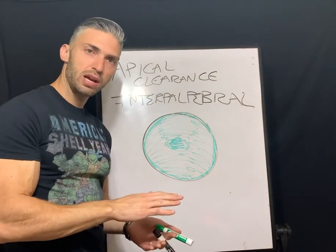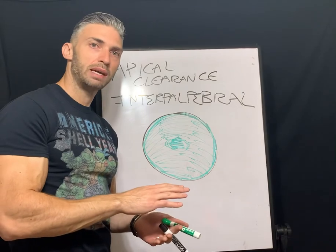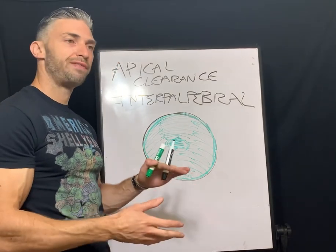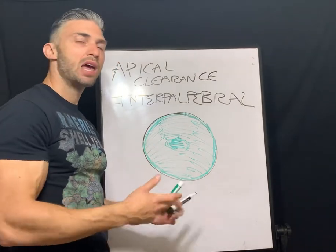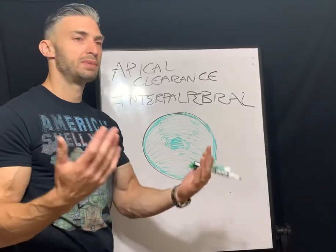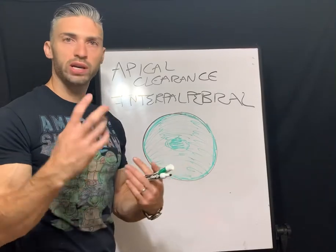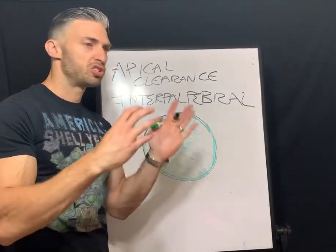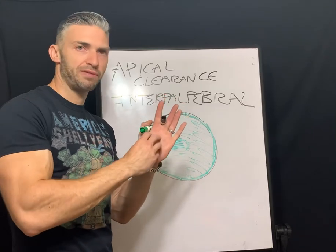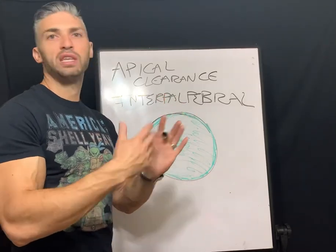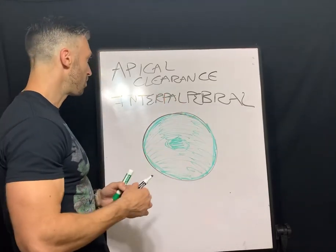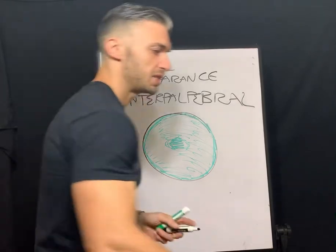To summarize the apical clearance or interpalpebral fit: smaller diameter of eight to nine millimeters, fit a little steeper than K. The way I remember it — you want them centered on the cornea, and steeper is tighter, so just think of them sitting right there on the cornea.